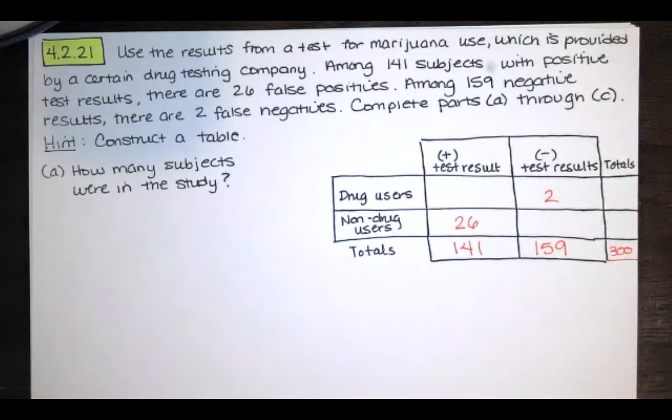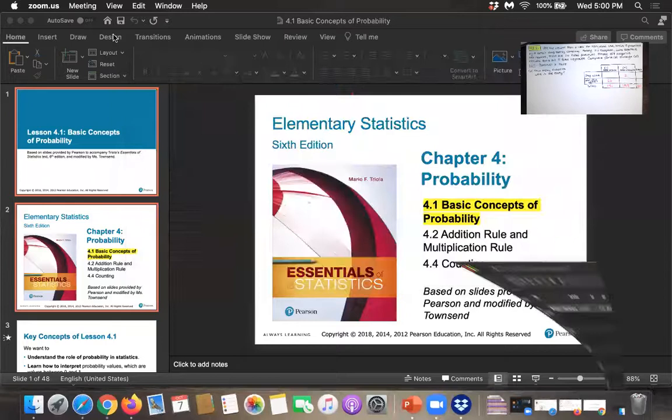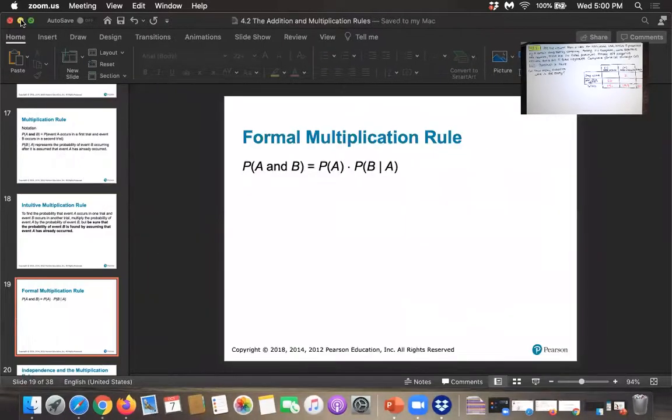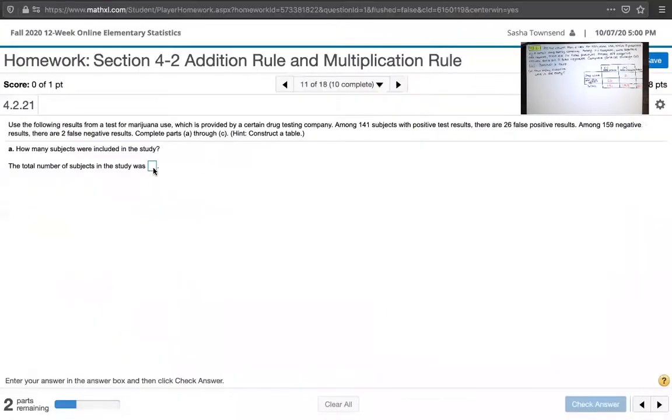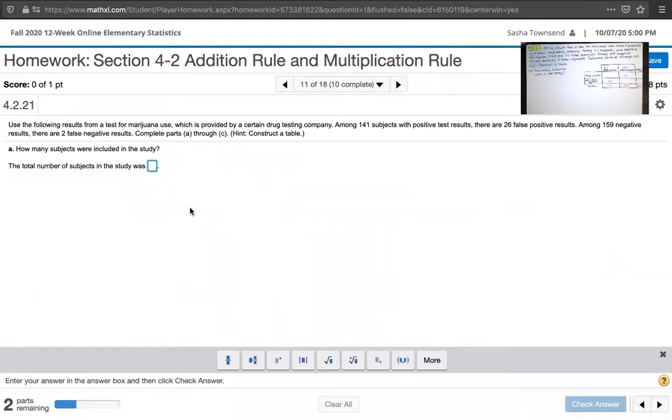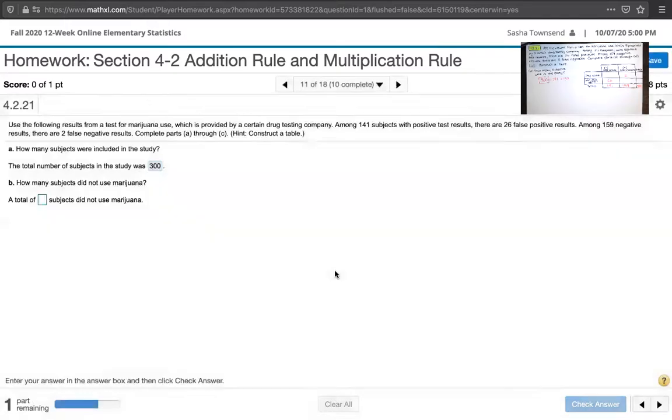Let's go back to sharing my screen. The total number of subjects in the study was 300. Let's see what they say. Yes, excellent. We added the positive test results to the negative test results, and we got 300 subjects in the study, which is the same as the total number of test results we have. Let's see what else they ask us.